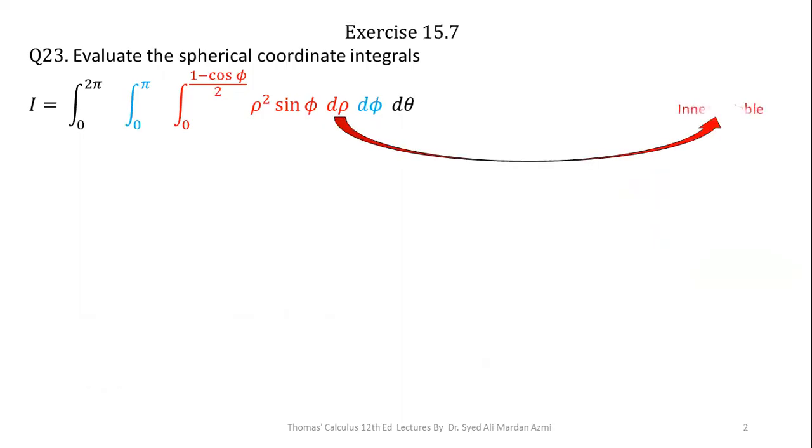In spherical coordinates our innermost variable is always ρ, our central variable is always φ, and our outer variable is always θ.